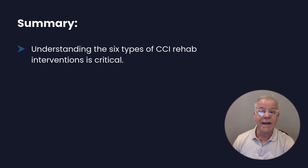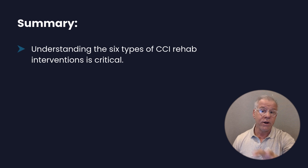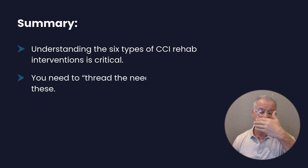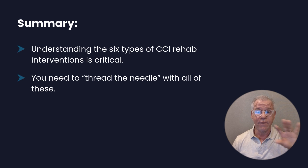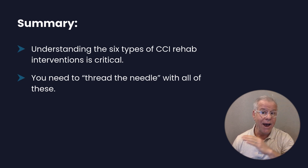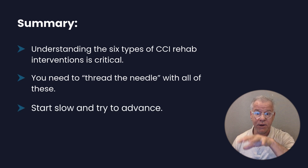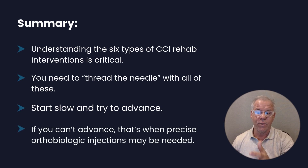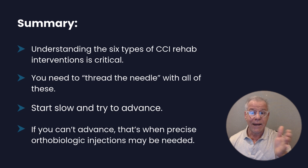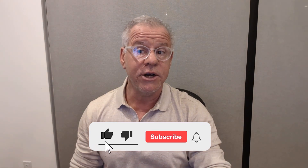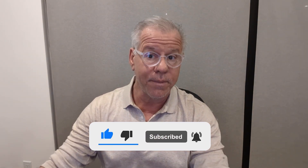In summary, understanding the six types of rehab interventions is really critical in rehabbing from CCI. You need to thread the needle with all of these. If you haven't watched that first video, threading the needle, go back to get an idea of how to approach these. It's all about starting slow, trying to advance, and keeping your symptoms at a minimum. If you can't advance, that's when precise orthobiologic injections may be needed. Thanks so much for watching — like, comment, share, and subscribe, because that's how we get this information out to more patients like you.